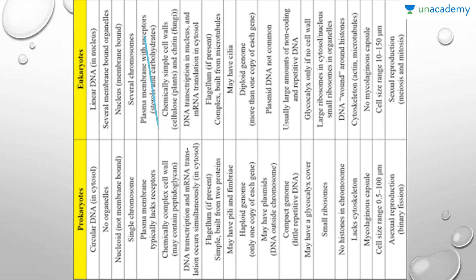In prokaryotes the plasma membrane typically lacks receptors, whereas in eukaryotes the plasma membrane has receptors for steroids and carbohydrates. Prokaryotes have a chemically complex cell wall which may contain peptidoglycan, whereas eukaryotes have chemically simpler cell walls made of cellulose in plants, chitin in fungi, and no cell wall at all in animal cells. In prokaryotes DNA transcription and mRNA translation occur simultaneously in the cytosol, whereas in eukaryotes DNA transcription occurs in the nucleus and mRNA translation in the cytosol.